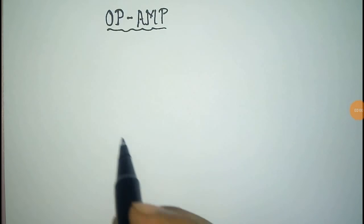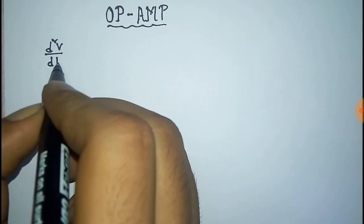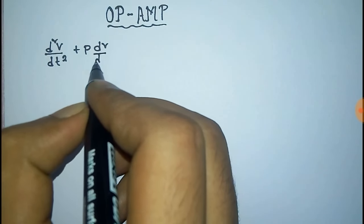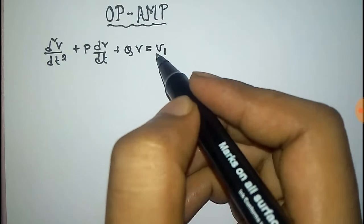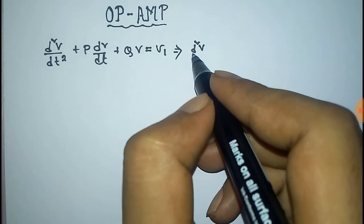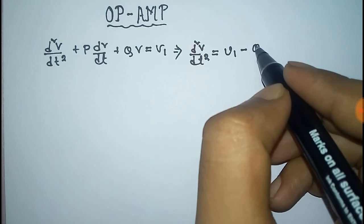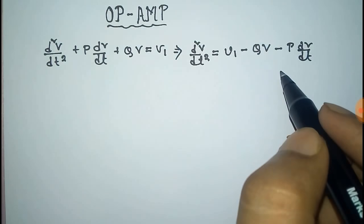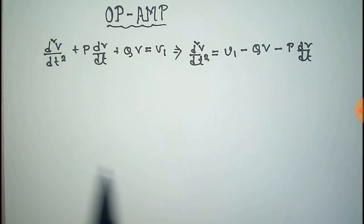We have to solve differential equations with operational amplifiers. For this, we take a differential equation: d²v/dt² plus p·dv/dt plus q·v equals v1, where v1 is a function of time. We can write this equation as d²v/dt² equals v1 minus q·v minus p·dv/dt. We have to implement this equation as an op-amp circuit.